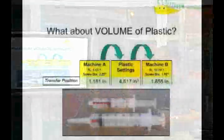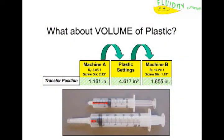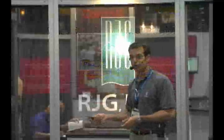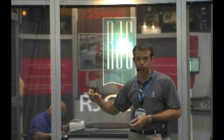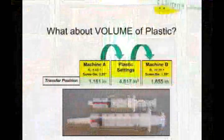A syringe is a great analogy to illustrate this point. You have two different syringe diameters. If you're taking a shot of morphine from your doctor for some chronic pain, the shot out of one of these is going to make you feel better; the shot out of the other will just make you dead. So it's very important that we understand when the diameter of the screw changes, we have to account for that in our process setup sheet.